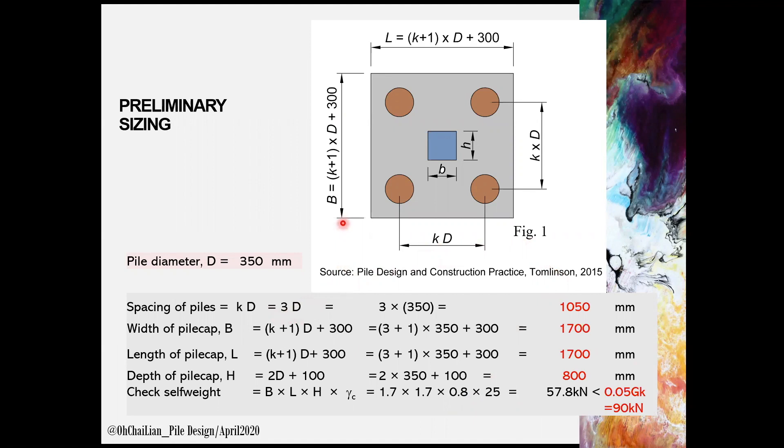Pile diameter is 350 mm. Using the guideline, we can obtain the size width, length, and depth of the pile cap. Self weight of the pile cap is checked against and shall be lesser than the assumed self weight. If this is not complied, repeat the calculation for the numbers of piles required.